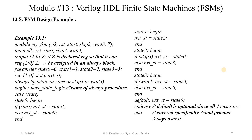Here is the Verilog HDL coding of this FSM. The module my_fsm has input ports: clock, reset, start, skip3, wait3, and output z. The output z is declared as a register variable since it is used in a procedural block. Using parameters, we define state0, state1, state2, and state3. We also define two internal 2-bit variables: state (present state) and next_state. Two bits are needed since we have four states.